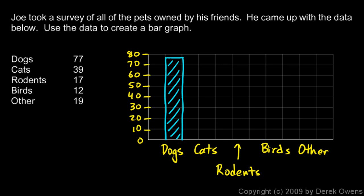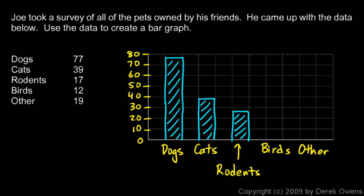And then cats — there are 39 cats, so that's just a little bit less than 40. I'll put my line just barely below 40 and draw in a bar to represent the number of cats. And then rodents — there are 17 rodents, so I need to go a little bit less than 20, about right there. That bar represents the rodents. There are only 12 birds, so that's just a little bit over 10, so I'll put about that height for 12 birds.